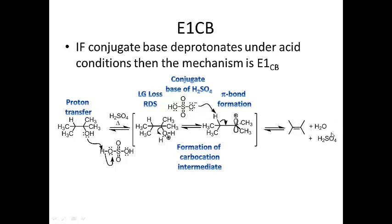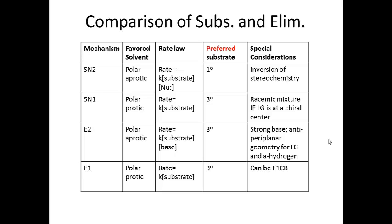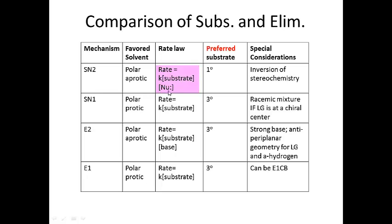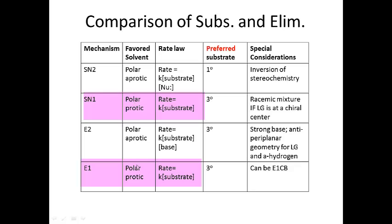Let's compare SN2, SN1, E2, and E1. The bimolecular mechanisms — SN2 and E2 — are both favored in aprotic solvents and both have a two-term rate law. For SN2: rate = k[substrate][nucleophile]. For E2: rate = k[substrate][base]. For SN1 and E1, both are favored in polar protic solvents and both have a unimolecular rate law: rate = k[substrate].